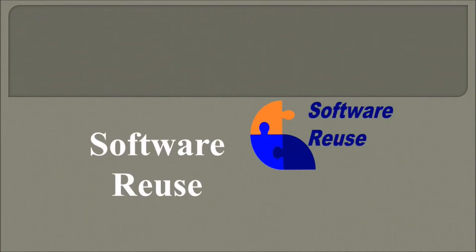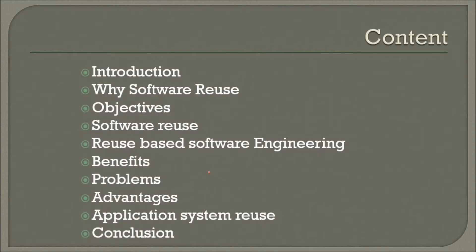Now let us talk about software reuse. Reuse means something is available and you are utilizing it again rather than making it again and again. We will see the introduction, why software reuse, objectives, the software reuse, reuse-based software engineering, benefits, problems, advantages, application system reuse, and conclusion.